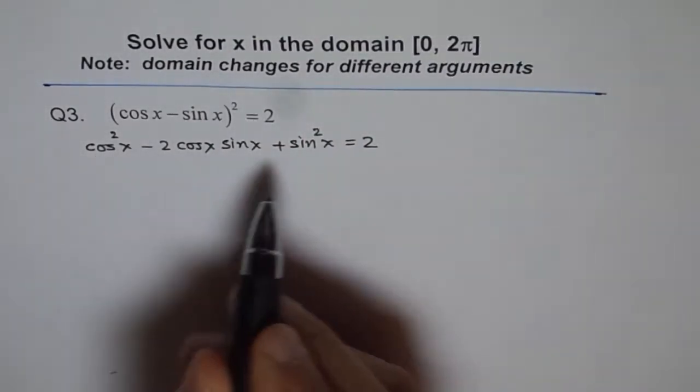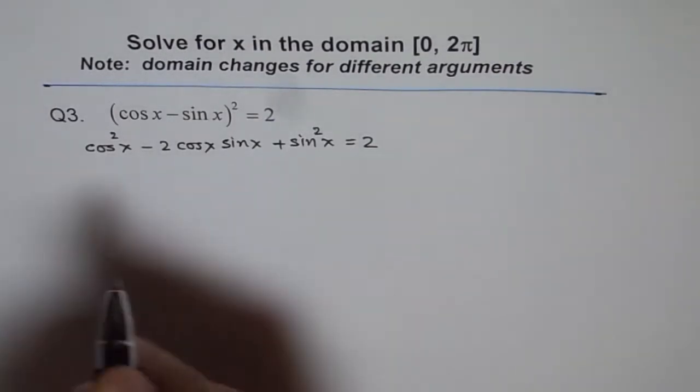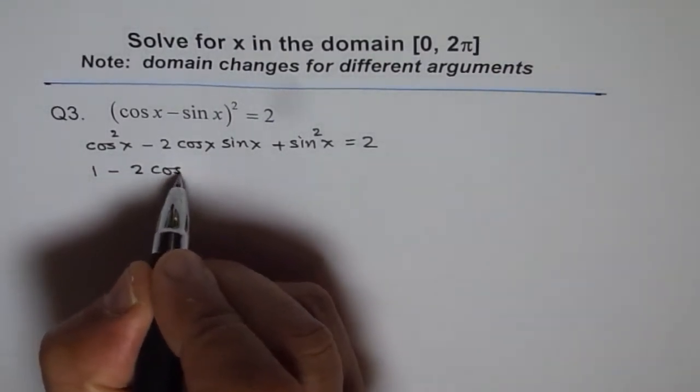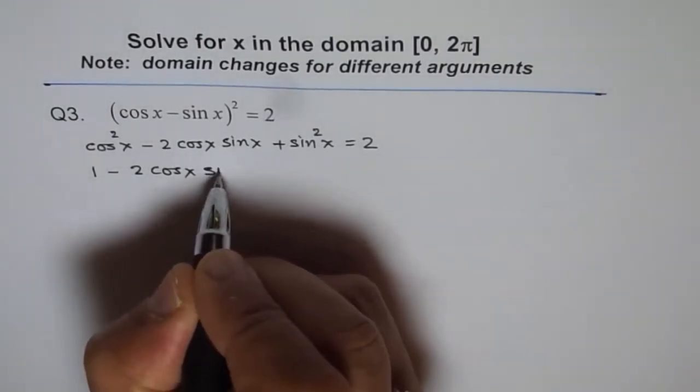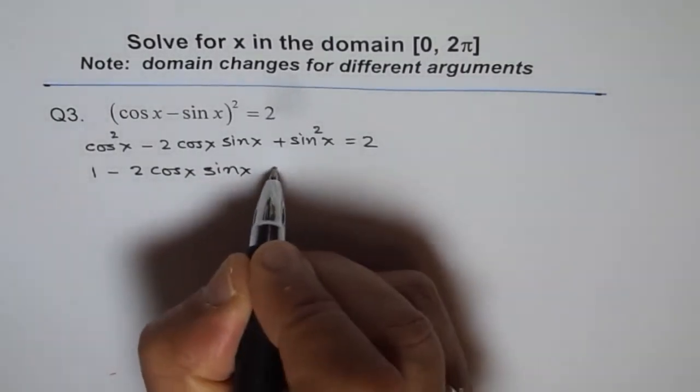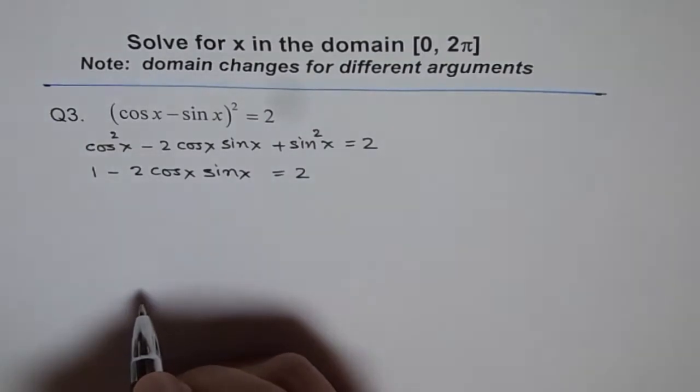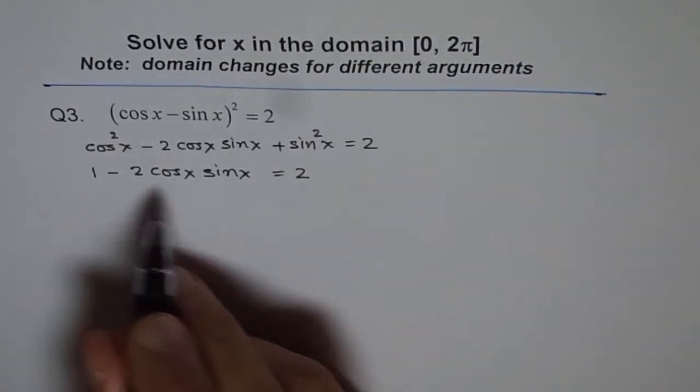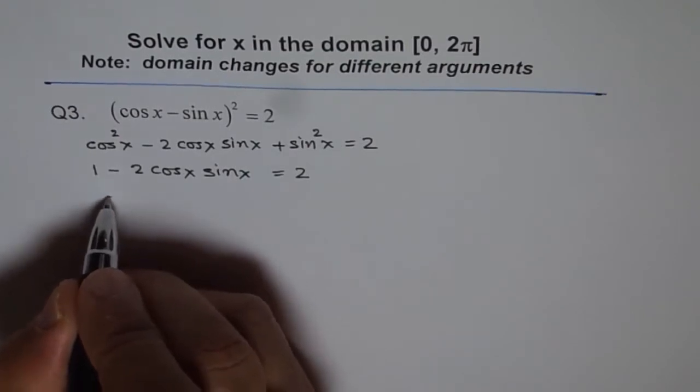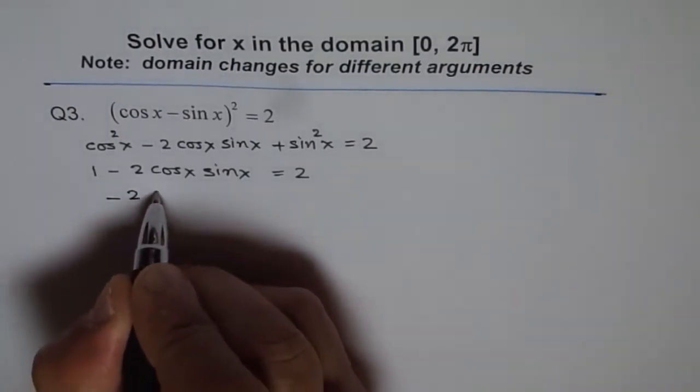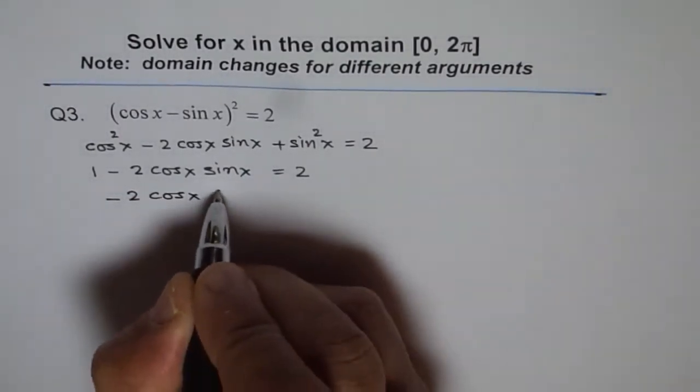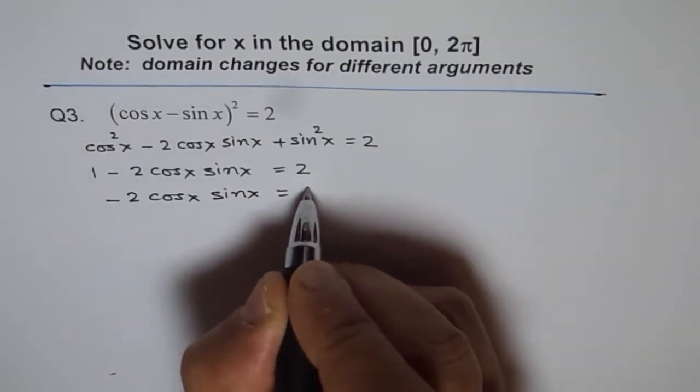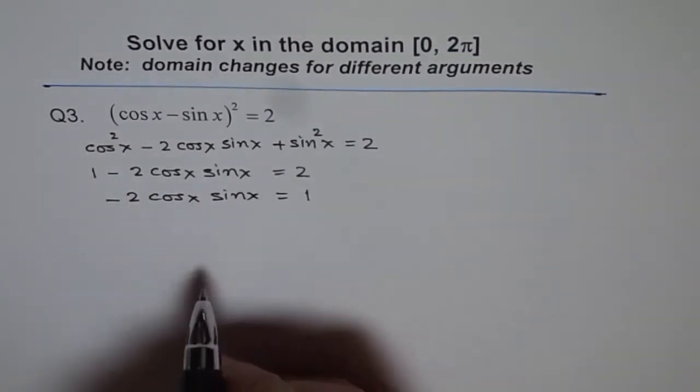Now you know cos²x + sin²x is 1, right? So let's write down 1 - 2cos x sin x = 2. Now we can subtract 1 from both sides and we get -2cos x sin x = 1.